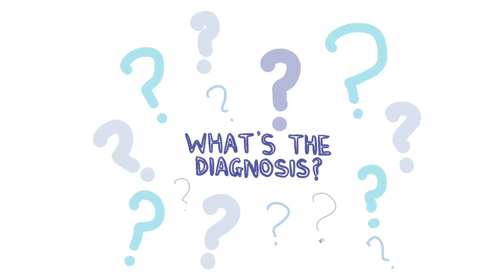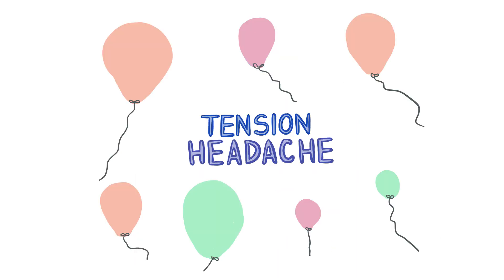Case 3: a 42-year-old man attends a GP appointment complaining of a recent headache. He describes a three-day history of frontal and occipital pain which feels like a pressure or tightness, somewhat relieved by ibuprofen. He's a new father with no past medical history or drug history. The answer is a tension headache. The clues are the pressure or tightness like a tight elastic band around the head, and the background of being a new father, showing how important it is to ask about social factors.